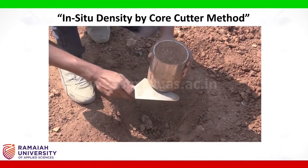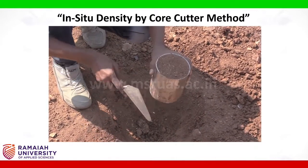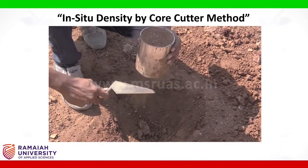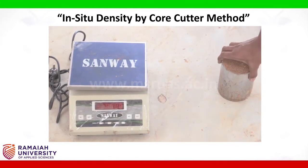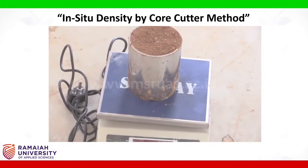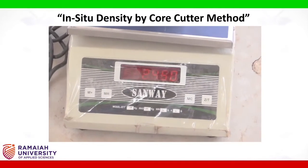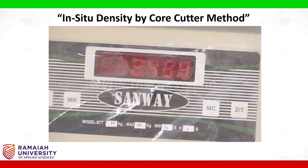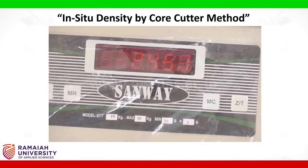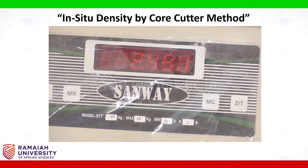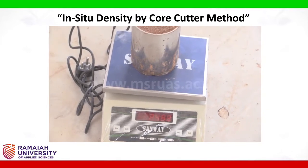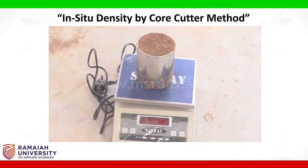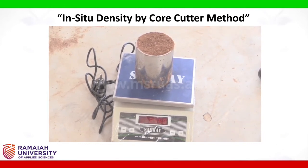Clean the outside surface as well. After cleaning the core cutter, place the core cutter with the soil sample in the weighing machine and weigh it. Note down the weight and deduct the empty weight of the core cutter to get the weight of the soil sample. After taking the weight, remove it from the weighing machine and take a small sample from it for water content determination. That finishes the experiment.